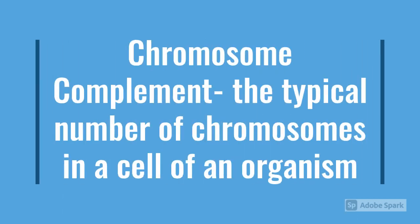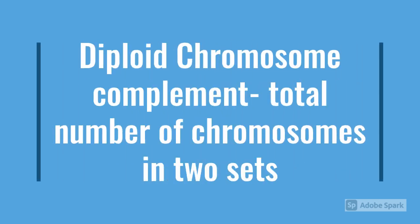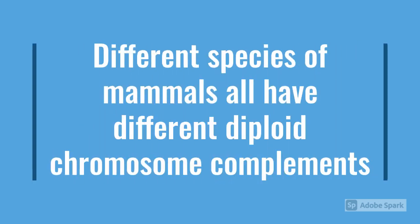Now for chromosome complement. Chromosome complement is just a term for how many chromosomes an organism has. Diploid complement is just a term for the total number of chromosomes in two sets. So for humans, that's 46 chromosomes. Notice that when I'm saying the number of chromosomes, I make sure to include 'for humans,' because different species of mammals all have different diploid chromosome complements. For example, a mosquito has a diploid chromosome of six, while a chimpanzee has 48 chromosomes in two sets.